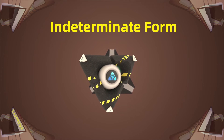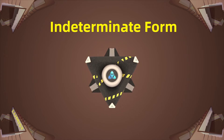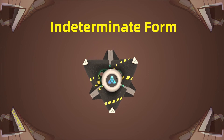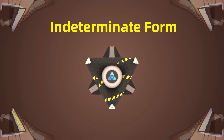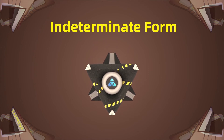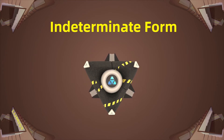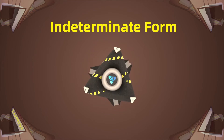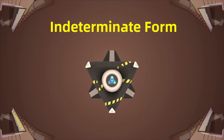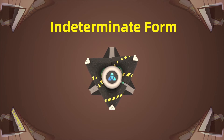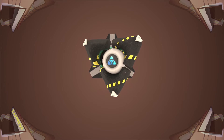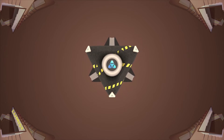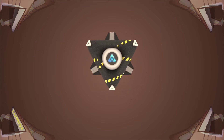Intuitively, indeterminate form is a limit that involves infinity or zero, or both, so you can't find the limit using the methods we've learned previously. The limit in indeterminate form may or may not exist, so there may actually be no limit to calculate. There are many types of indeterminate form — let us introduce them one by one.